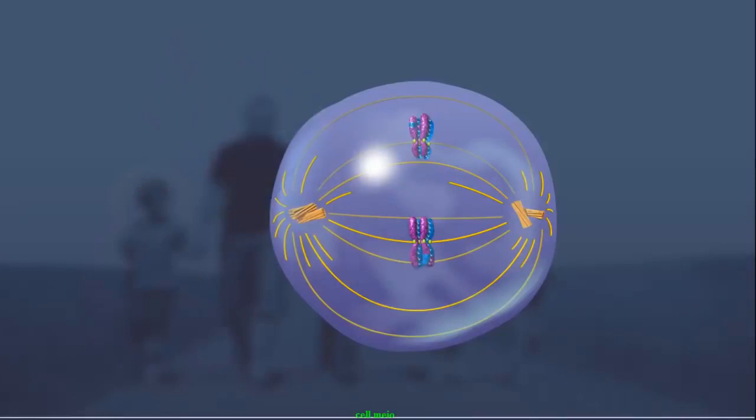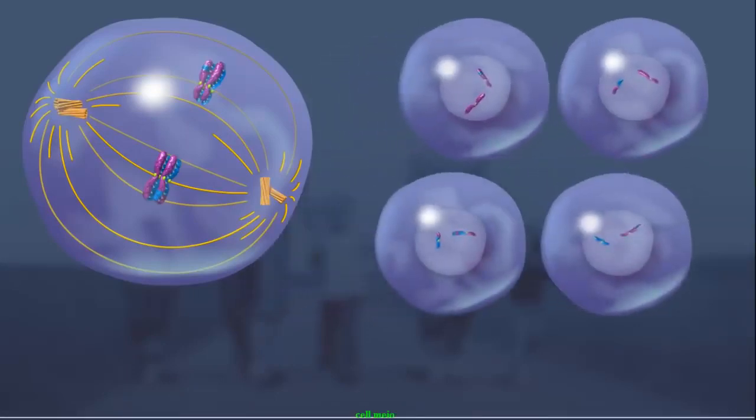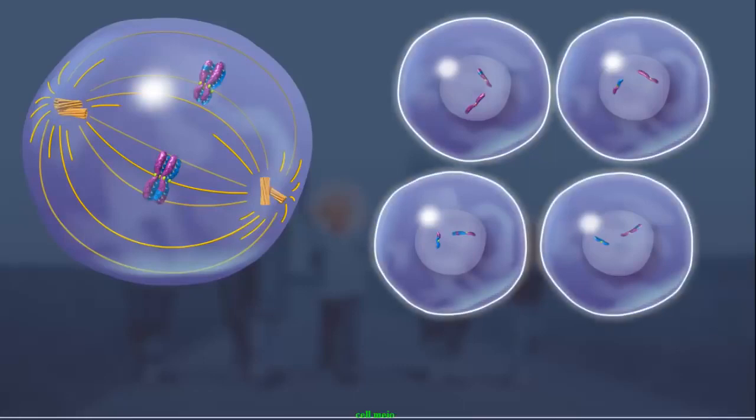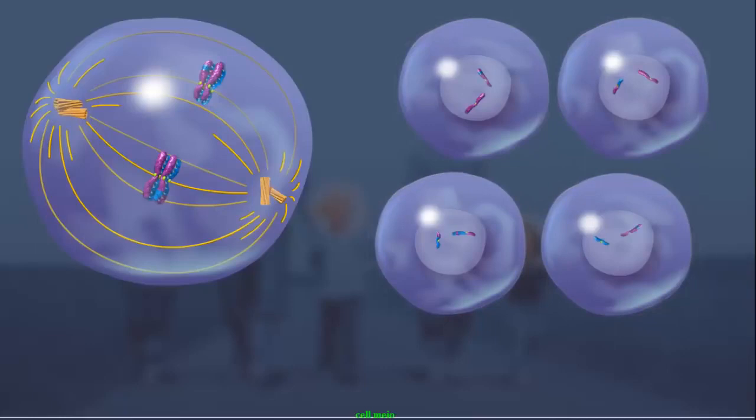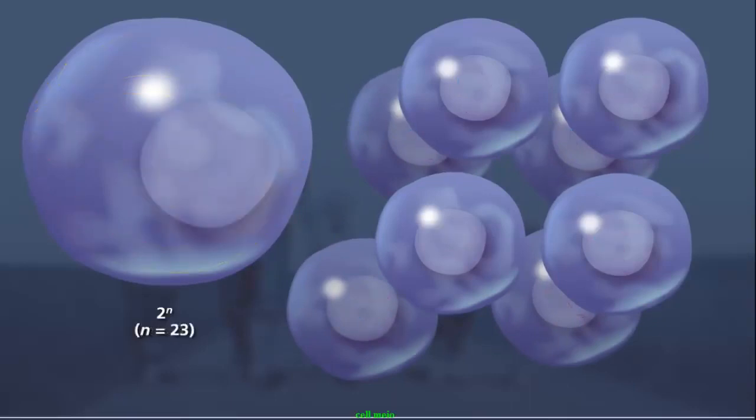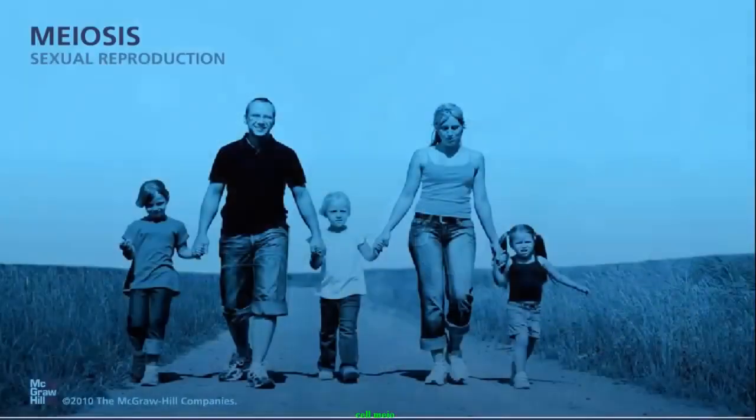In addition to crossing over, in metaphase I, the pairs of homologous chromosomes align independently along the metaphase plate, and sort independently into the daughter cells. This process, called independent assortment, produces four genetically distinct haploid gametes. As the total number of chromosomes increases in an organism, the number of genetically distinct gametes increases by two to the nth power. This means an organism with n equals three can produce eight unique gametes. For humans where n equals 23, there are two to the 23rd power unique gametes formed, or over a million different possible combinations.